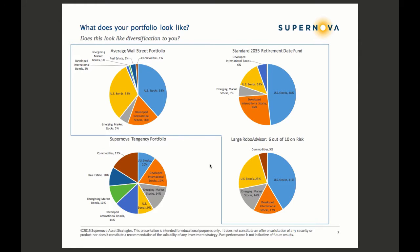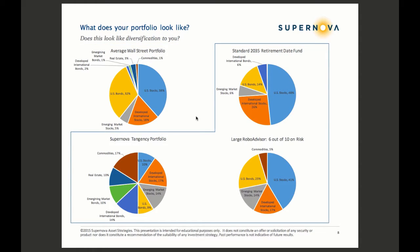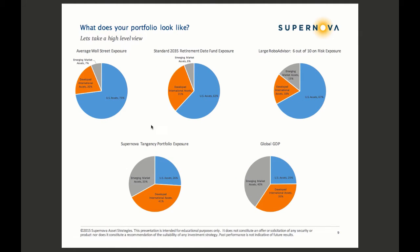These three portfolios look very similar from an asset allocation standpoint — overweight U.S. stocks and bonds, with a chunk in developed international stocks. These three portfolios also look very similar in terms of price. Let's take a very high-level view: U.S. assets dominate the cookie-cutter portfolios. Let's compare that to global GDP and our Supernova tangency portfolio.